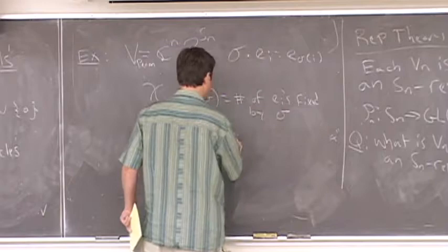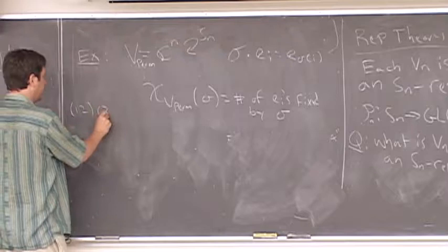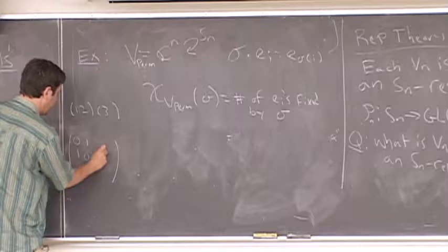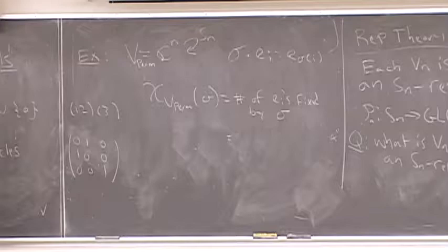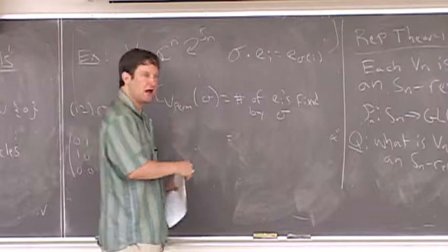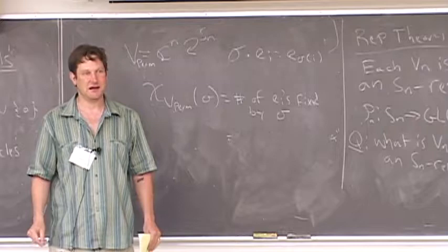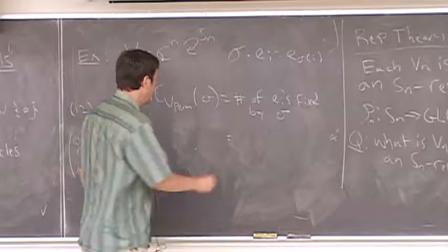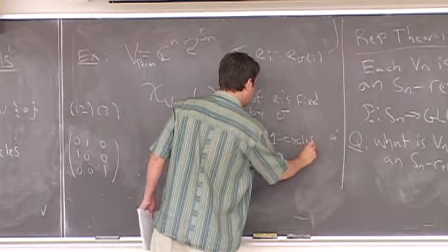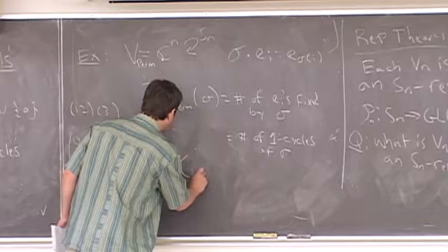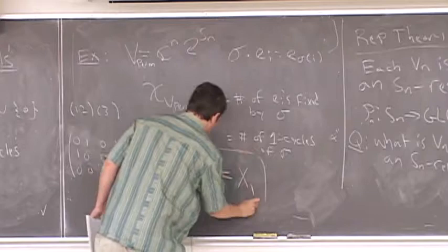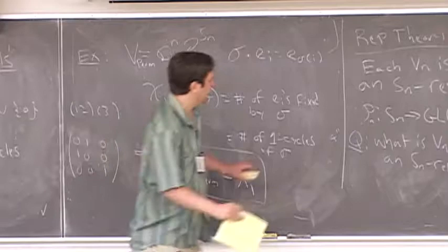A fixed e_i occurs only when i is a one-cycle. So the character of the permutation representation equals X₁ — the number of one-cycles. What's remarkable is that on the left side you have an n-dimensional representation, but the character is given by a single polynomial X₁ that doesn't depend on n explicitly. Let me do another example: wedge² of V_{perm}, the alternating two-tensors, where sigma acts on each entry. Let's figure out the character by computing the trace.